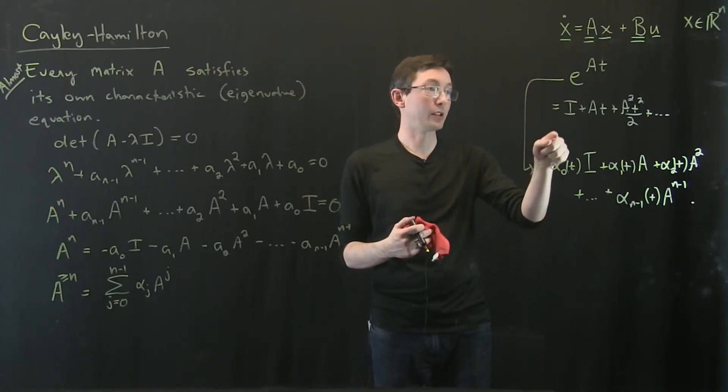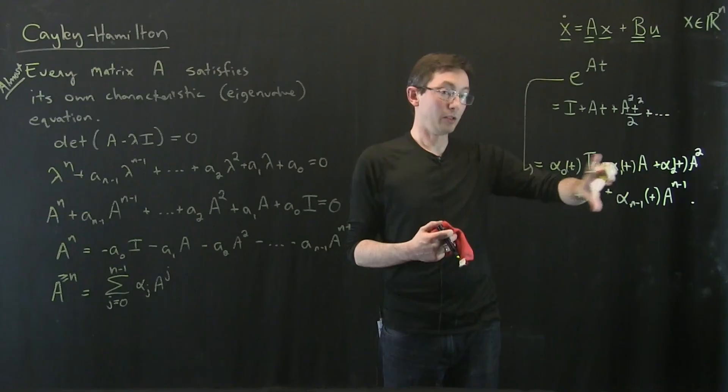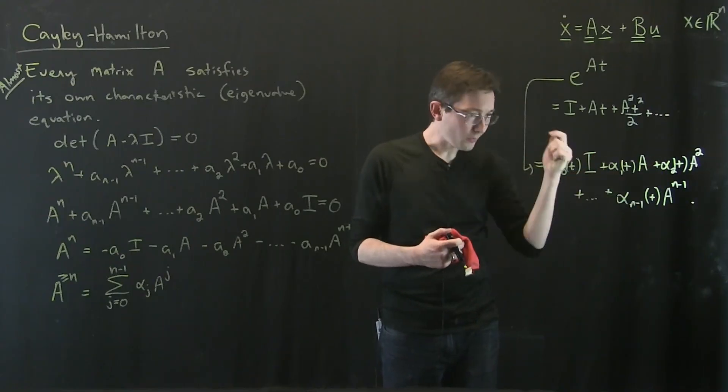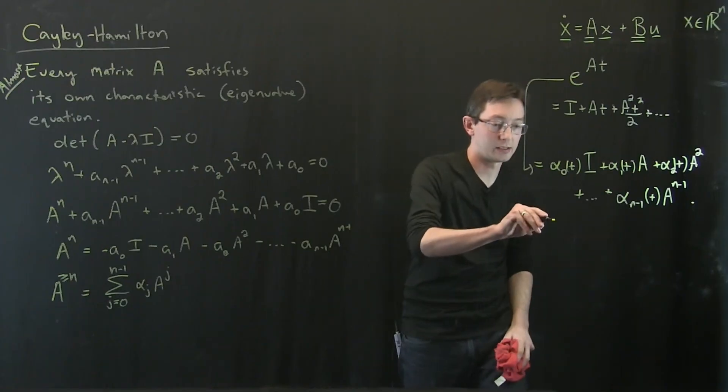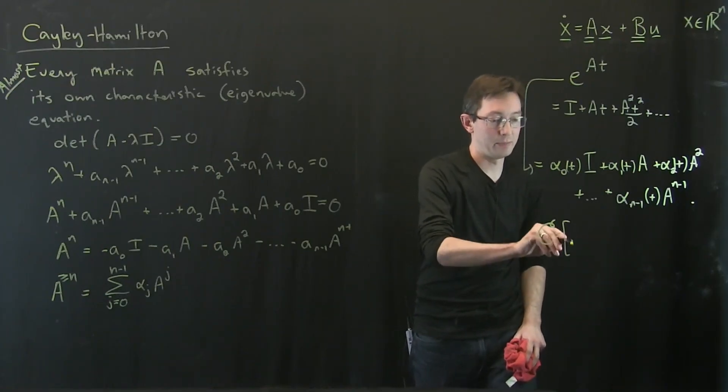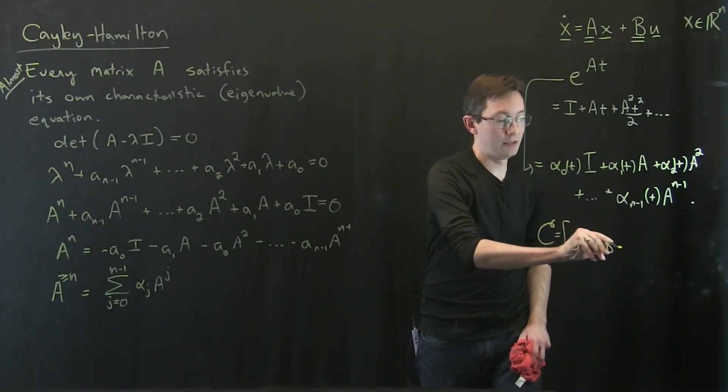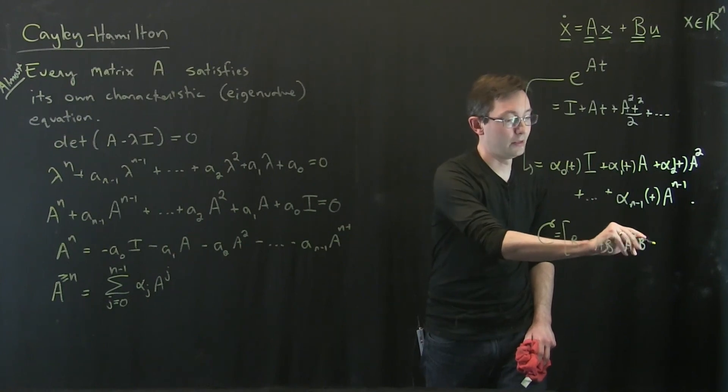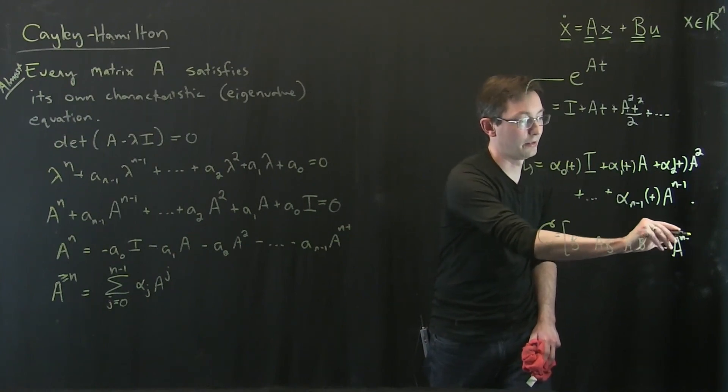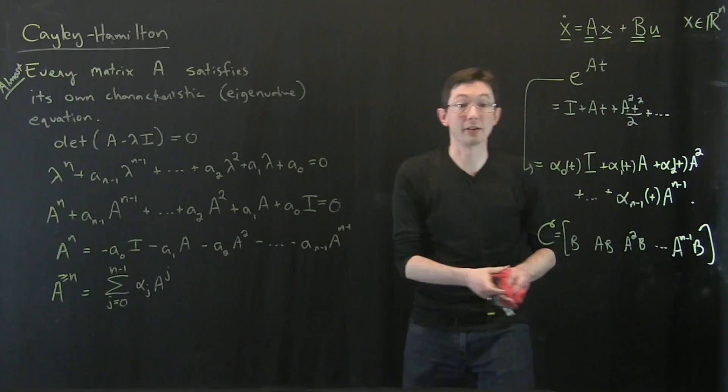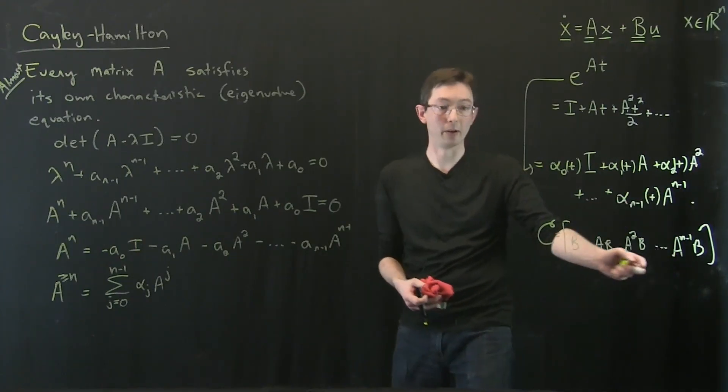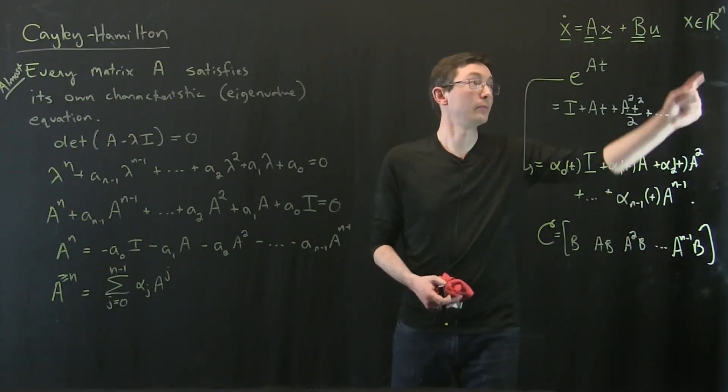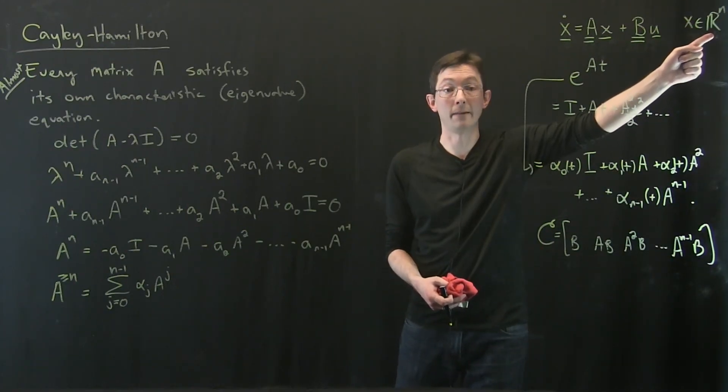So in the next segment I'm actually going to construct using this expression an equivalence that if the controllability matrix C, remember this is B, A B, A squared B dot dot dot up to A to the n minus 1 B. And now you're starting to see like this only goes up to n minus 1, this only goes up to n minus 1. If this has rank n, if this spans all of R^n,